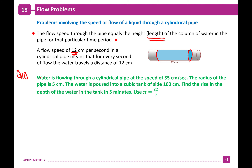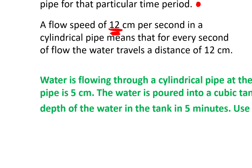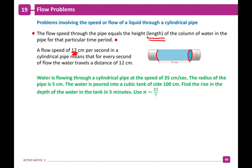Question 10: Water is flowing through a cylindrical pipe at a speed of 35 centimeters per second. The radius of the pipe is 5 centimeters. The water is poured into a cubic tank of side 10 centimeters. Find the rise in the depth of the water in the tank in 5 minutes. In one second, you have a cylinder that's 35 centimeters in height, full of water.